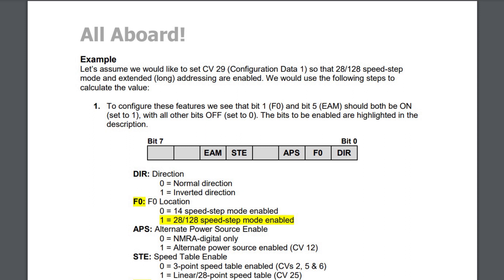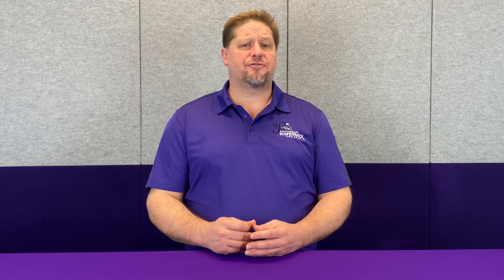The next one is worth the value of 4 — bit number 2. This value of 4 enables analog mode. So if you want to have a decoder that runs both in analog mode and in digital mode, you can enable this bit. If you don't, you'd set it to zero and you move on.